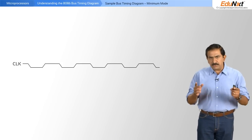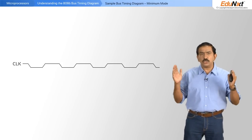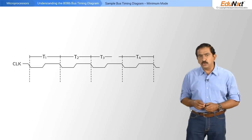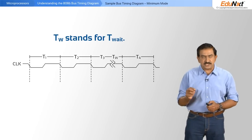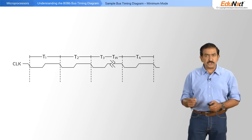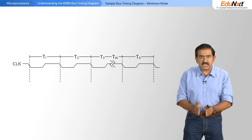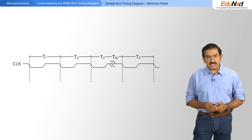Let us now look at a sample bus timing diagram of the 8086 operating in the minimum mode. This is your clock signal. Typically for the 8086, every instruction runs across four clock signals: T1, T2, T3 and T4. In addition, you will notice something called TW. TW stands for T-wait, and in certain operations when the peripheral device is slow, it will automatically introduce a wait state such that the processor is forced to wait till the peripheral device becomes ready.